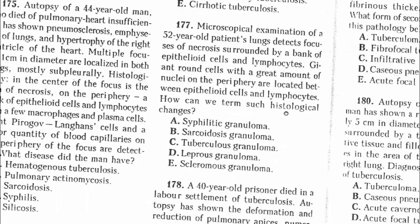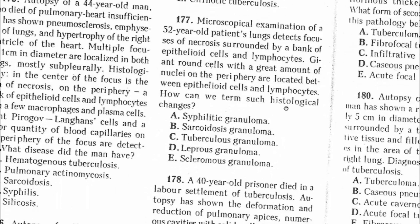Question 177: Microscopical examination of a 52-year-old patient's lungs detects foci of necrosis surrounded by a bank of epithelioid cells, lymphocytes, and giant cells. This indicates a tuberculosis granuloma.